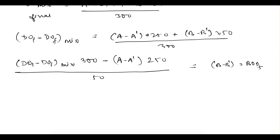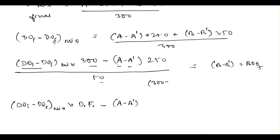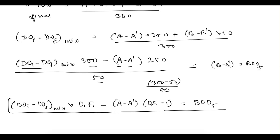This is the general expression: BOD5 = (DOi − DOf)_mix × DF − (A − A') × (DF − 1), where DF is the dilution factor and (A − A') is the DO change in the dilution water bottle. This formula can be used to solve any question where the dilution bottle also has some oxygen demand.